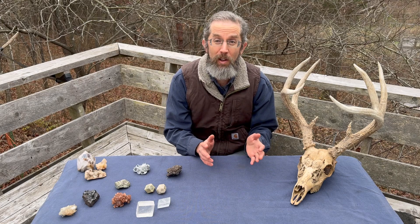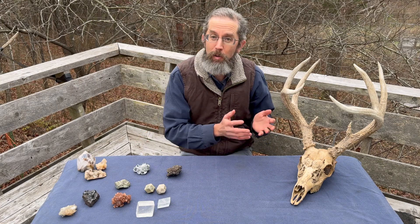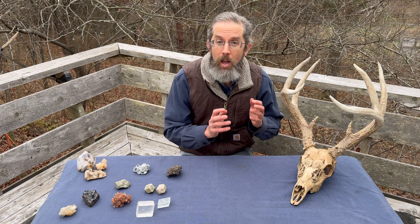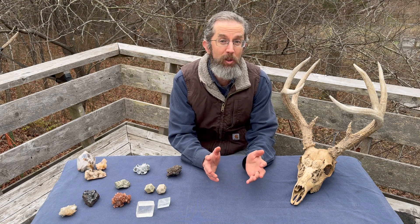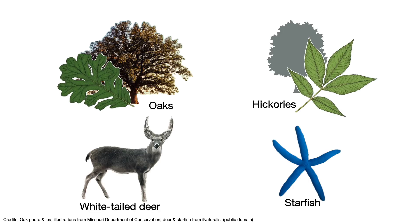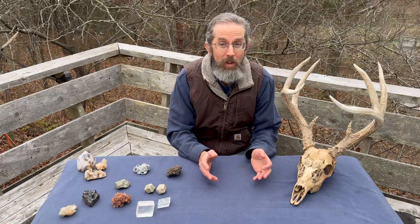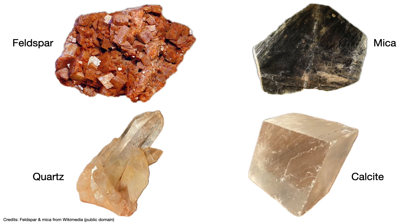We want you to consider how geological minerals might be analogous to biological species. Let's begin with some examples of what people might think of as familiar species: oaks, hickories, white-tailed deer, and starfish. And now, some common minerals: feldspar, mica, quartz, and calcite.